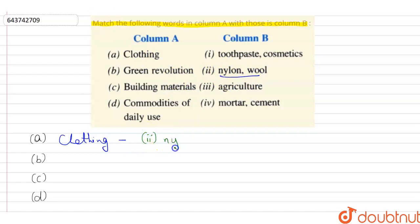That is nylon, wool. Nylon is a polymer where wool is obtained from sheep.